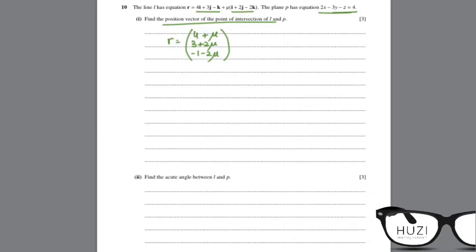This was step 1. Step 2, you substitute the R for the line into the R for the plane. R of the line into the R of the plane. So this would be 4 plus mu, then 3 plus 2 mu, and minus 1 minus 2 mu. Dot the normal. The normal is 2, minus 3, minus 1. So 2, minus 3, minus 1 equals 4.